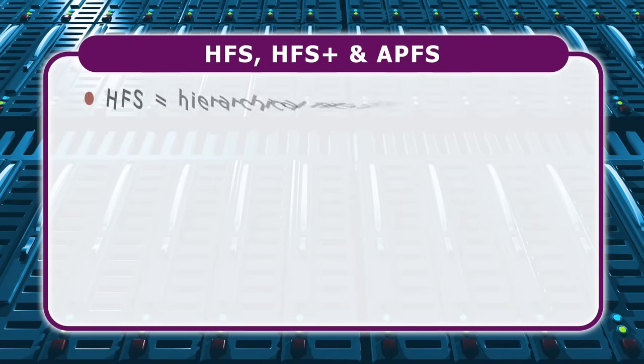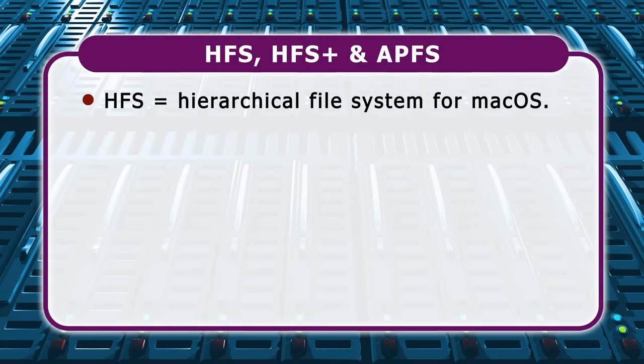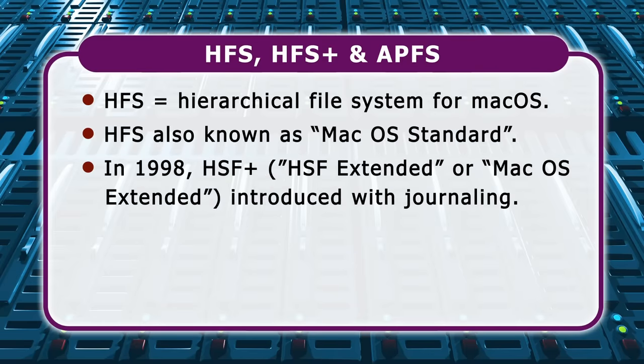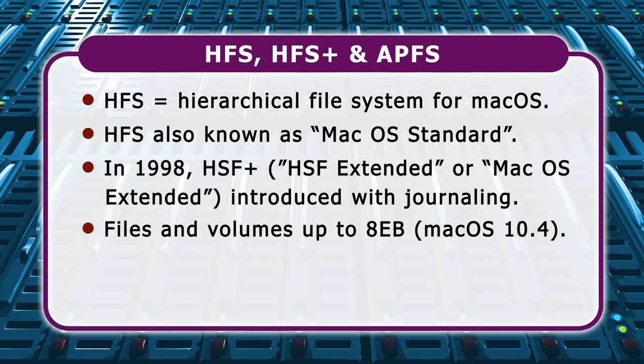HFS, or the Hierarchical File System, was introduced by Apple in 1985 for use in Mac OS. It offers a maximum file size of 2 gigabytes and a maximum volume size of 2 terabytes, and is also known as Mac OS Standard. In 1998, HFS was upgraded to a new version called HFS Plus or HFS Extended, otherwise known as Mac OS Extended. This added journaling and has a maximum file size and volume size of 8 exabytes when using Mac OS 10.4 or above.